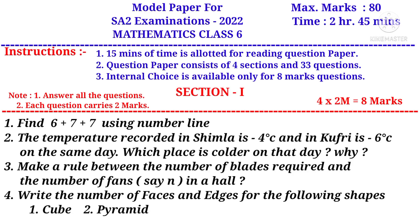Number two: the temperature recorded in Shimla is minus 4 degrees centigrade and in Kufri is minus 6 degrees centigrade on the same day. Which place is colder on that day and why. Number three: make a rule between the number of blades required and the number of fans, say N, in a hall. Number four: write the number of faces and edges for the following shapes. Number one, cube. Number two, pyramid.